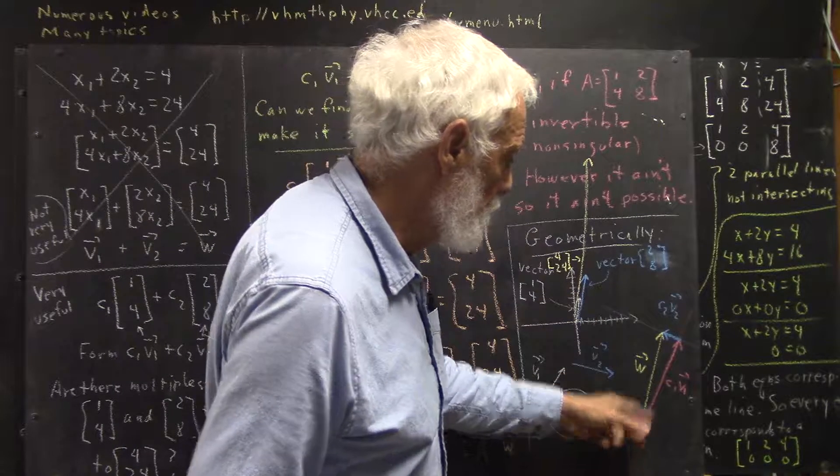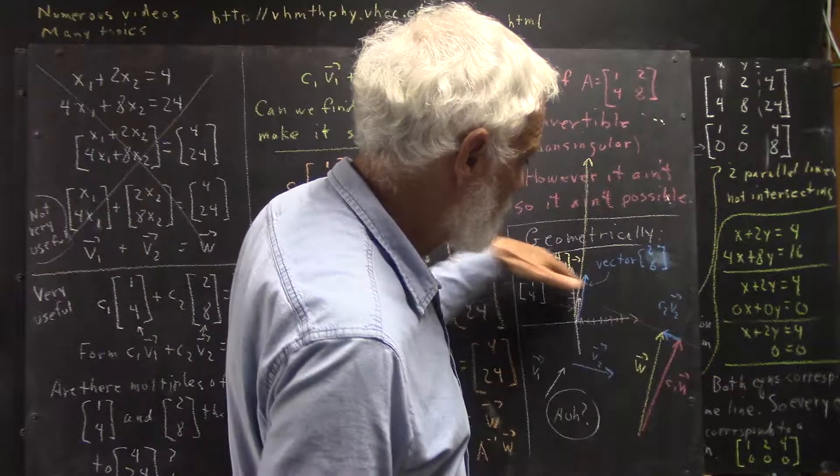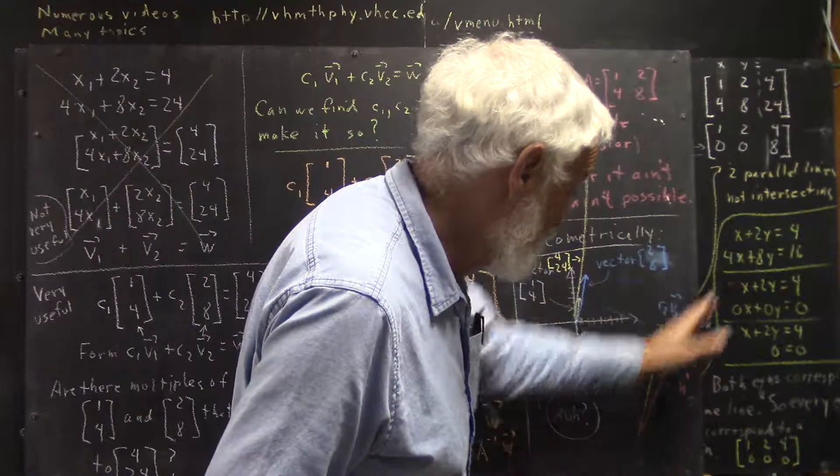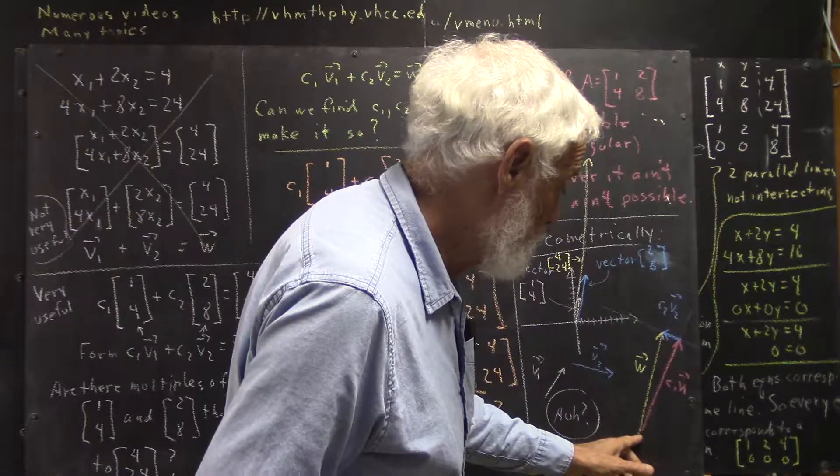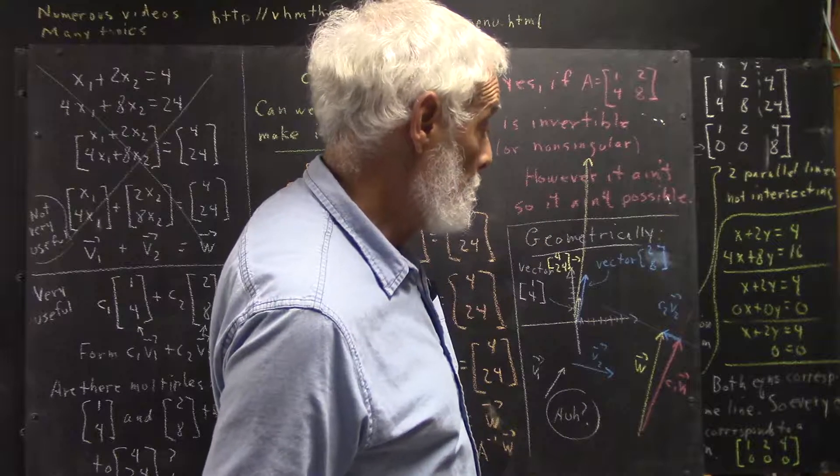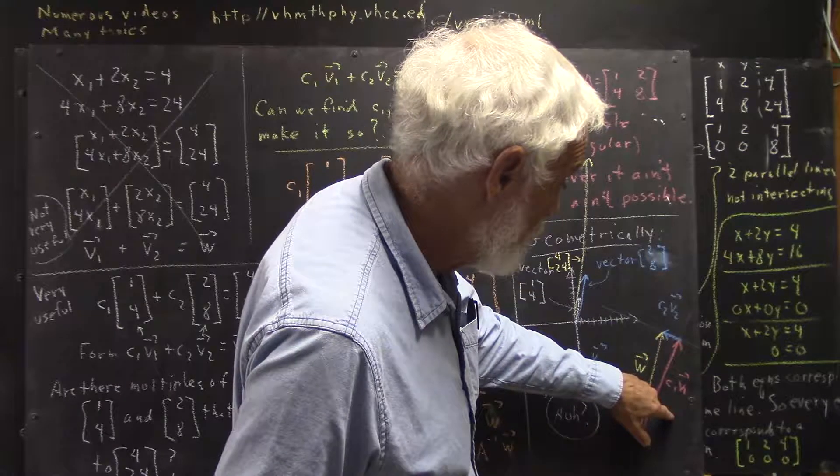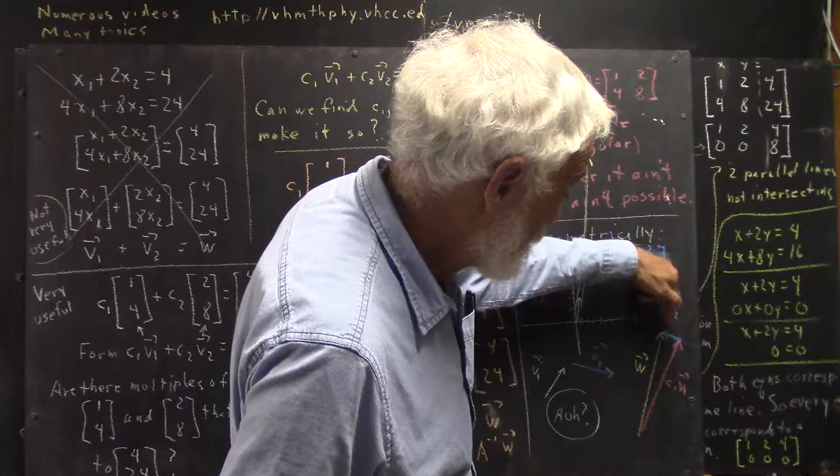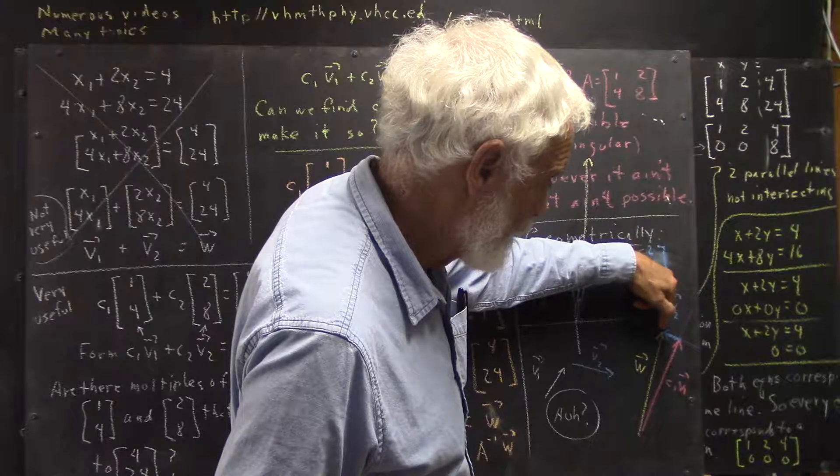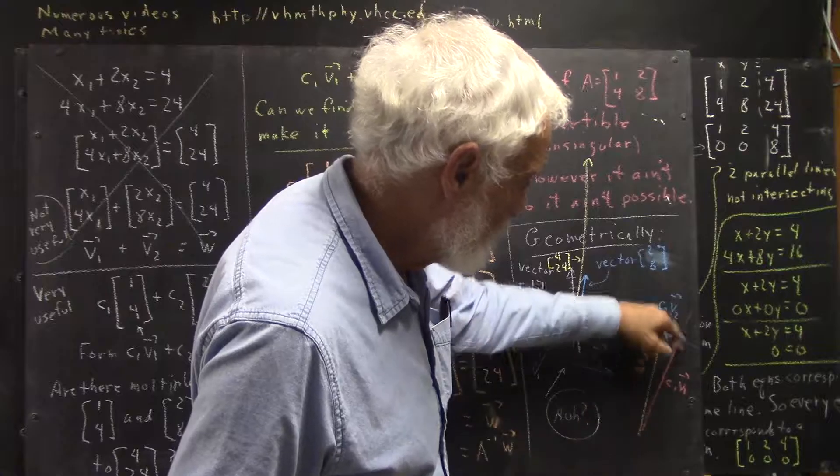We want our sum to start here and end here. If we draw a line parallel to the vector v2 going both ways, it'll intersect the line that we drew from the initial point parallel to v1. And that intersection point will be the end of our c1*v1 vector and the initial point of our c2*v2 vector. And the c2*v2 vector, of course, will end up at the terminal point of w, so that the c1*v1 plus the c2*v2 equals the w vector.